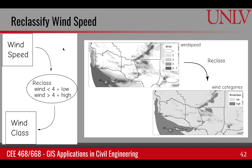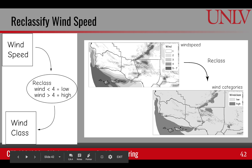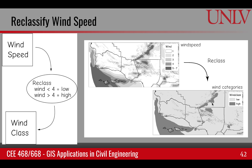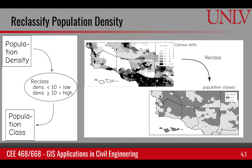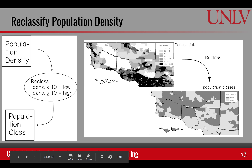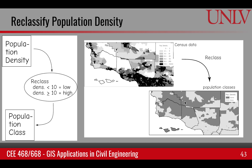First, let's look at wind speed. We are interested in high-speed winds, so we reclassify the wind speed — converting five classes into only two: low (less than 4 m/s) and high (greater than or equal to 4 m/s). This reclassification identifies areas with high winds. We are only interested in whether the wind is high, not the exact value. Next, we apply the same reclassification technique to the census data to identify low population density areas suitable for wind farming. However, not all sparsely populated areas are suitable because we also need high wind speed.